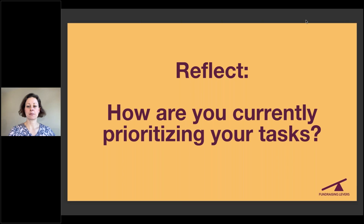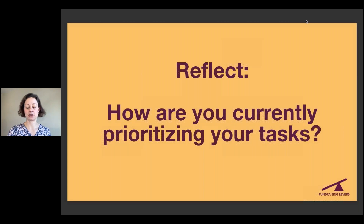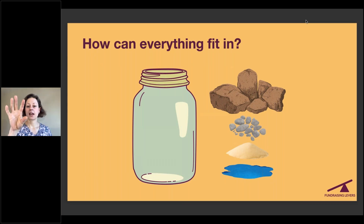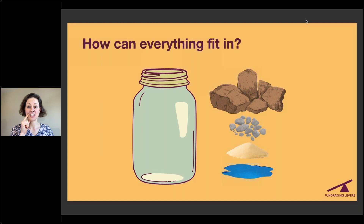You can spend a minute reflecting on how you currently prioritize your tasks. Is it by urgency? Is it by importance? Is it a mix of both? You have 500 tasks on your list — how do you decide what to work on? Meanwhile, I'll give you this little challenge. If you look at this jar and these rocks, pebbles, sand, and water — how would you fit everything in? Where would you start? How can you make sure that everything fits?